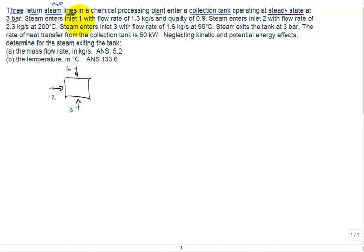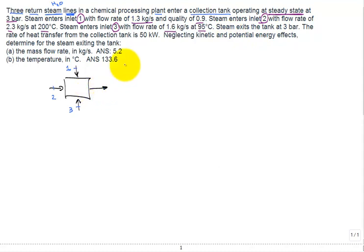Steam enters inlet one at a mass flow rate and a quality. Inlet two is described by a mass flow rate and a temperature, and inlet three by a mass flow rate and a temperature. The steam exits the tank at three bar through a single exit stream, which we'll label state four.